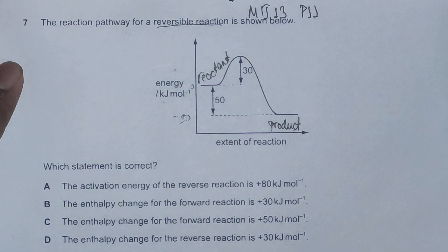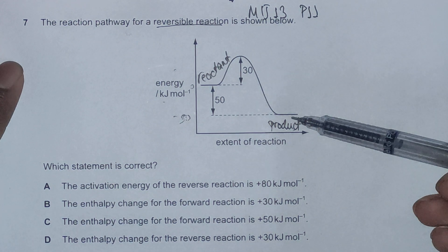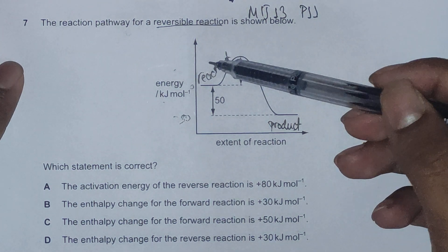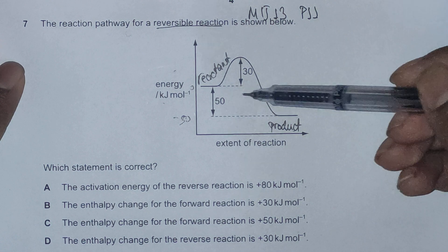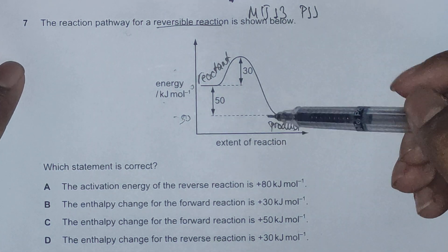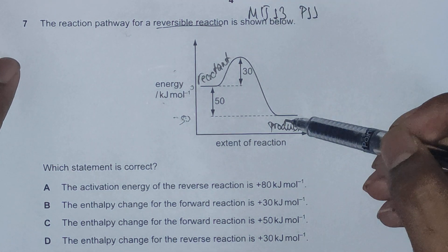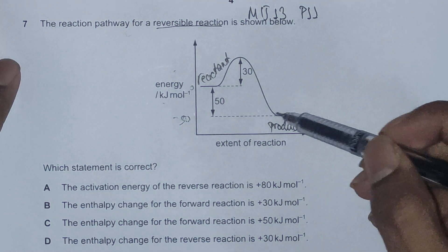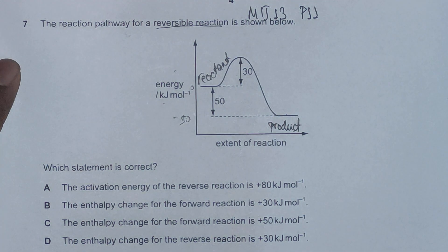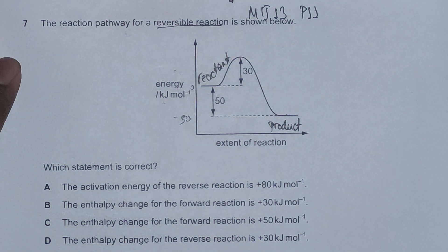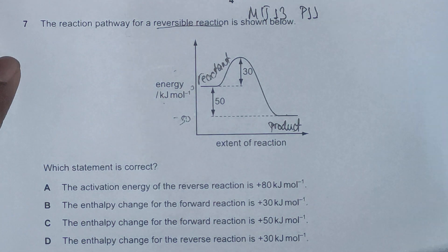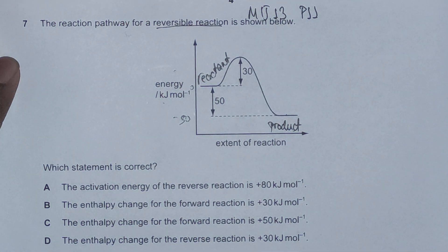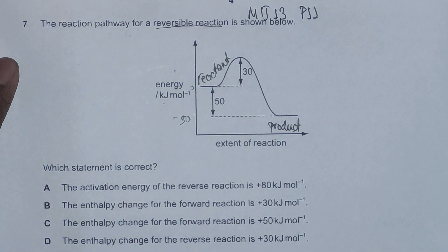If we look at the reverse reaction — formation of reactant from the product — the reaction is endothermic, because we are starting from negative 50 and going to zero, meaning energy has been absorbed from the surroundings. That covers the enthalpy information from the energy diagram.